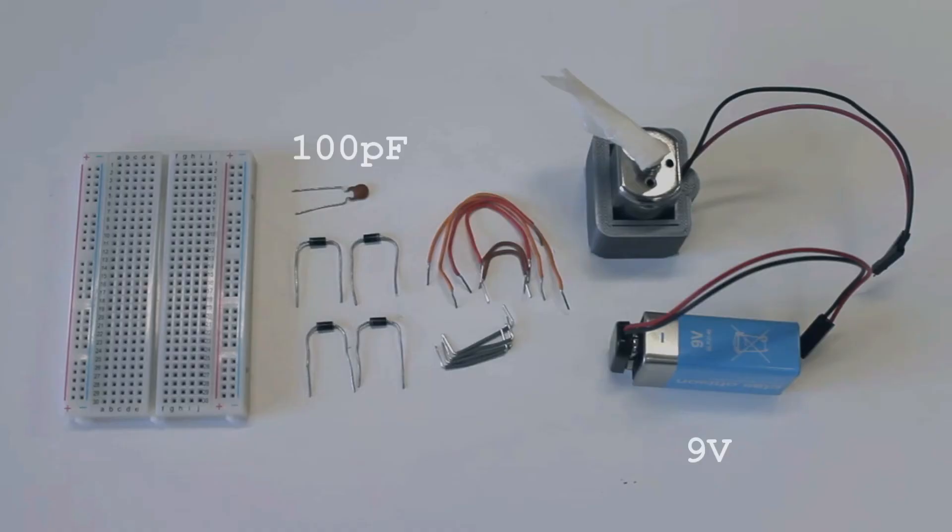To follow along you will need a breadboard, four diodes, one capacitor, a DC motor, a lot of hookup wires and a 9-volt battery.